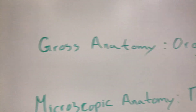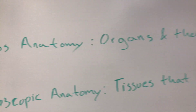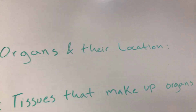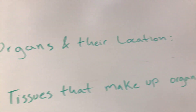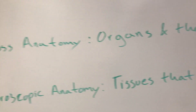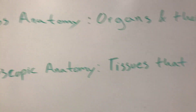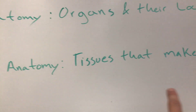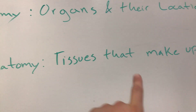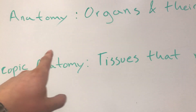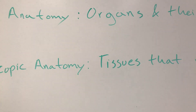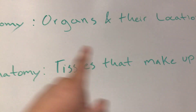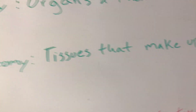So what is gross anatomy? Gross anatomy is your organs and their locations. It's like pointing and saying this is a liver, that's an arm, this is the heart, and it's in this location, that location, and that location.